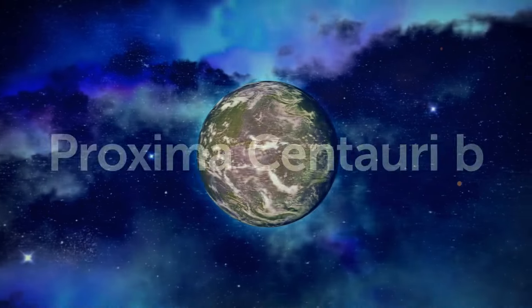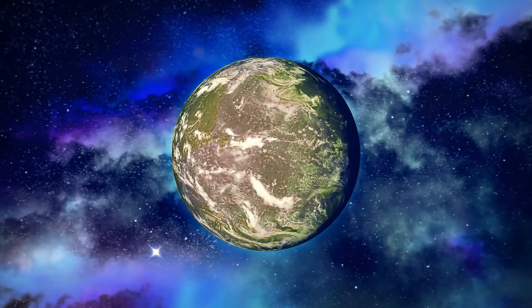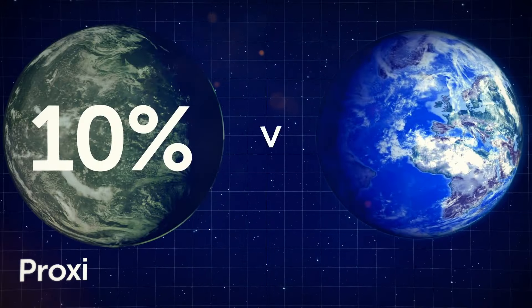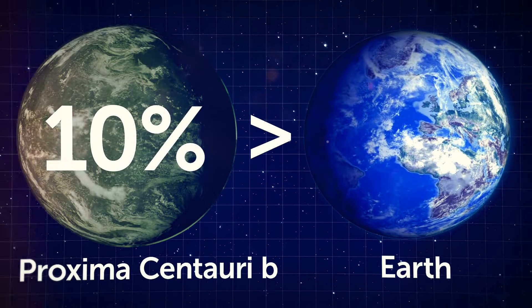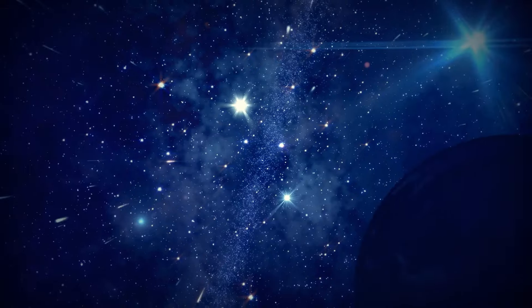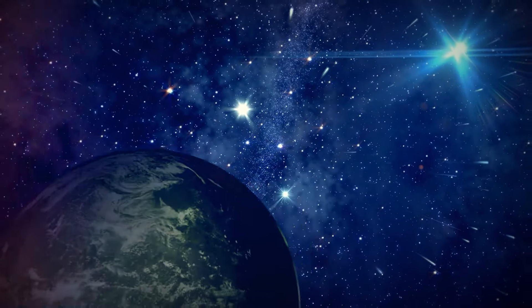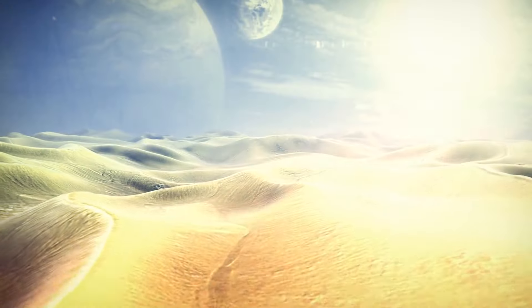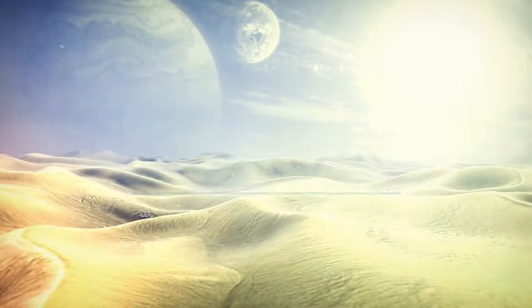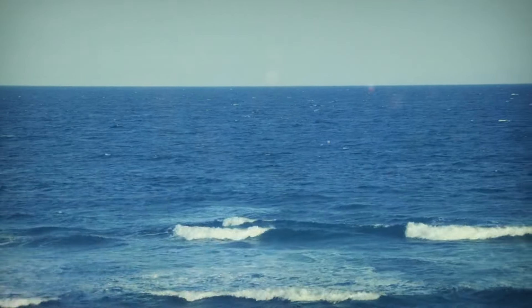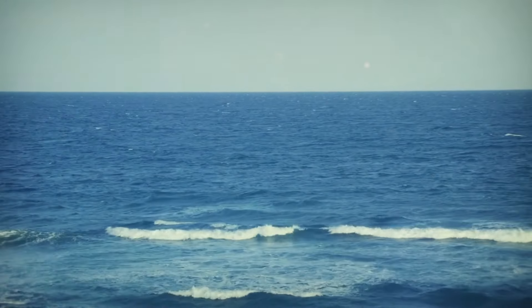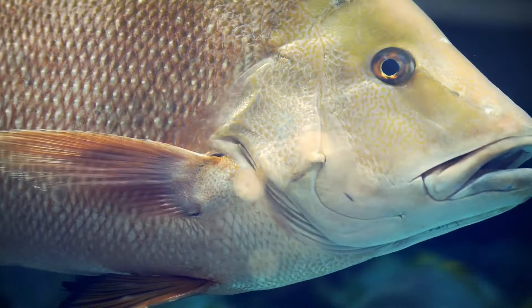This is Proxima Centauri b, a planet similar to Earth. It's only 10% larger than Earth and is in the habitable zone of the star. It's the perfect distance, not too far away and not too close, so the temperature isn't too high or low there. Water, if it exists on that planet, can be in a liquid state. And so, life can survive and evolve there.